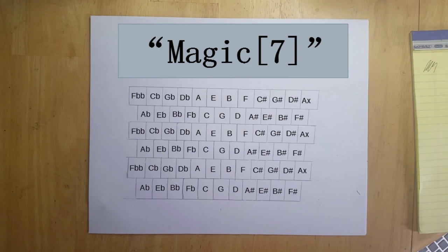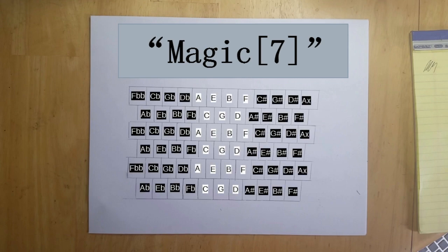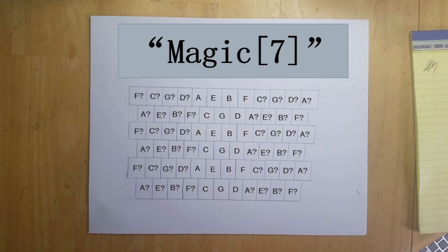Such a system does bias one, however, towards the unsharped and unflatted notes, aka the naturals. In a future video, I'll cover an alternative naming system that retains the functional information of the sharps and flats, while removing the bias towards the unsharped and unflatted notes.